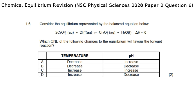Question 1.6: consider the equilibrium represented by the balanced equation. Which changes will favor the forward reaction? Two factors are being changed. First, temperature — the enthalpy change given is negative, meaning the forward reaction is exothermic. Second, pH — pH relates to hydronium or hydrogen ion concentration, where higher H⁺ concentration means lower pH.